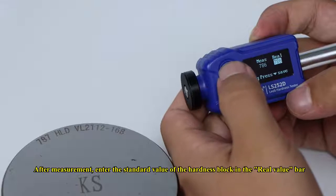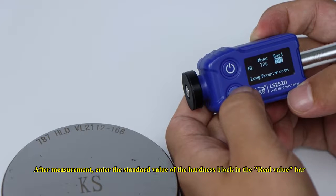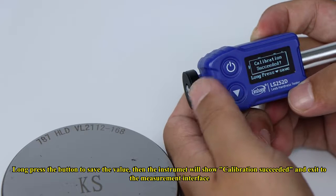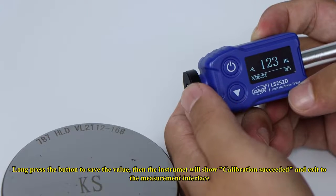After measurement, enter the standard value of the hardness block in the real value bar. Long press the button to save the value. Then the instrument will show calibration succeeded and exit to the measurement interface.